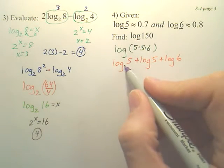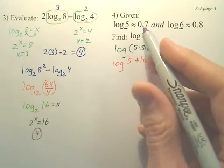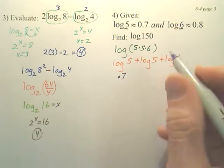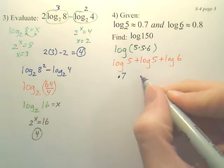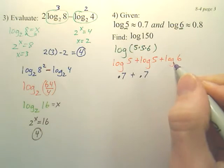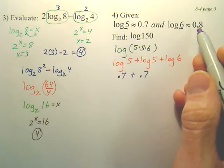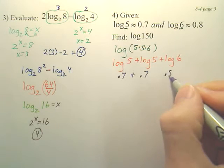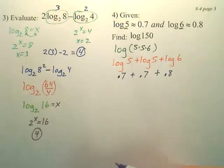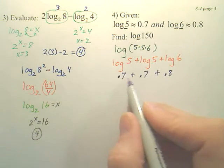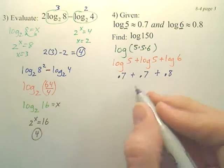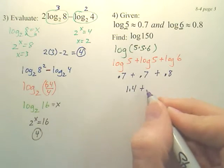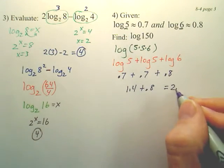What does log 5 equal? Approximately 0.7. What's log 6 equal? Approximately 0.8. Can you add that all up? 7 plus 7 is 14, so 1.4. 1.4 plus 0.8 is 2.2.